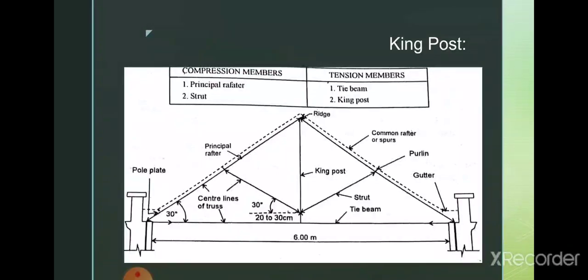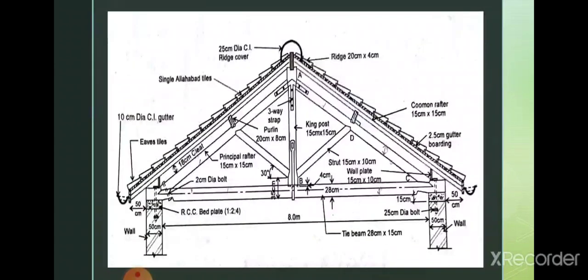Looking at the table, the compression members are the principal rafter and strut — these two members handle the compressive forces. The tie beam and king post are the members which handle the tensile forces.